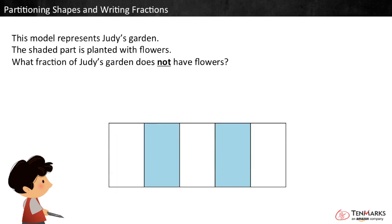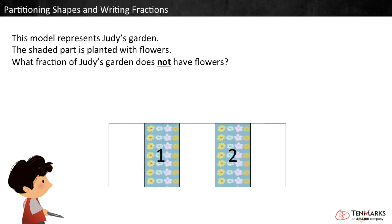Here's one more problem. This model represents Judy's garden. The shaded part is planted with flowers. What fraction of Judy's garden does not have flowers? We can see that this model is broken into five equal parts. Two of them are shaded — these parts have flowers. Three of them are not shaded.